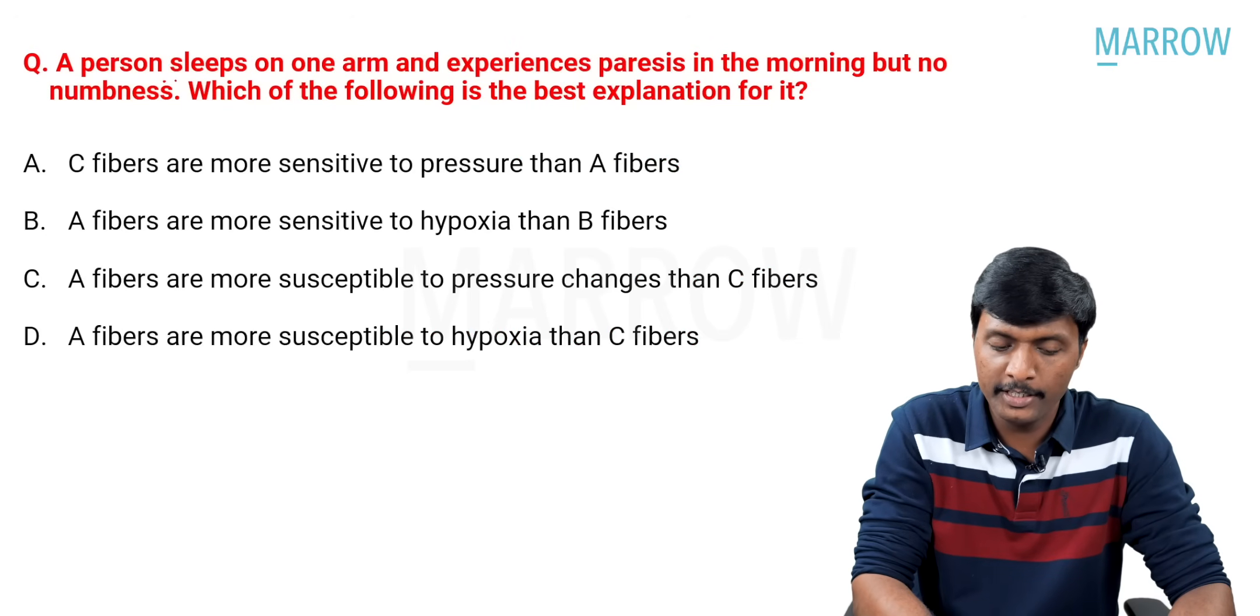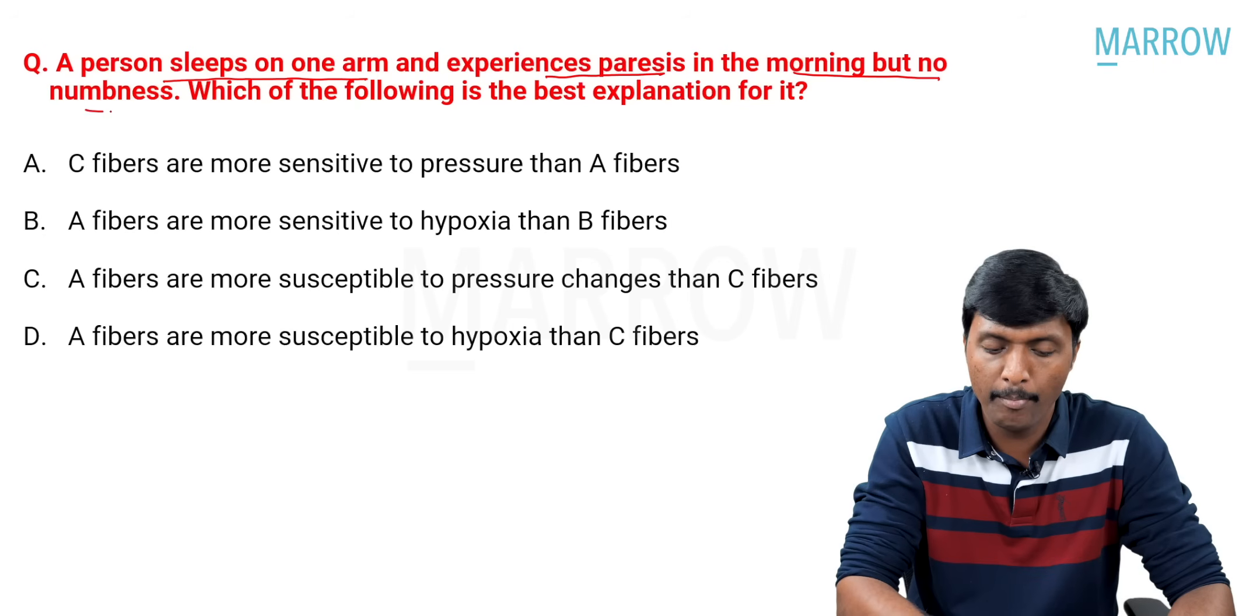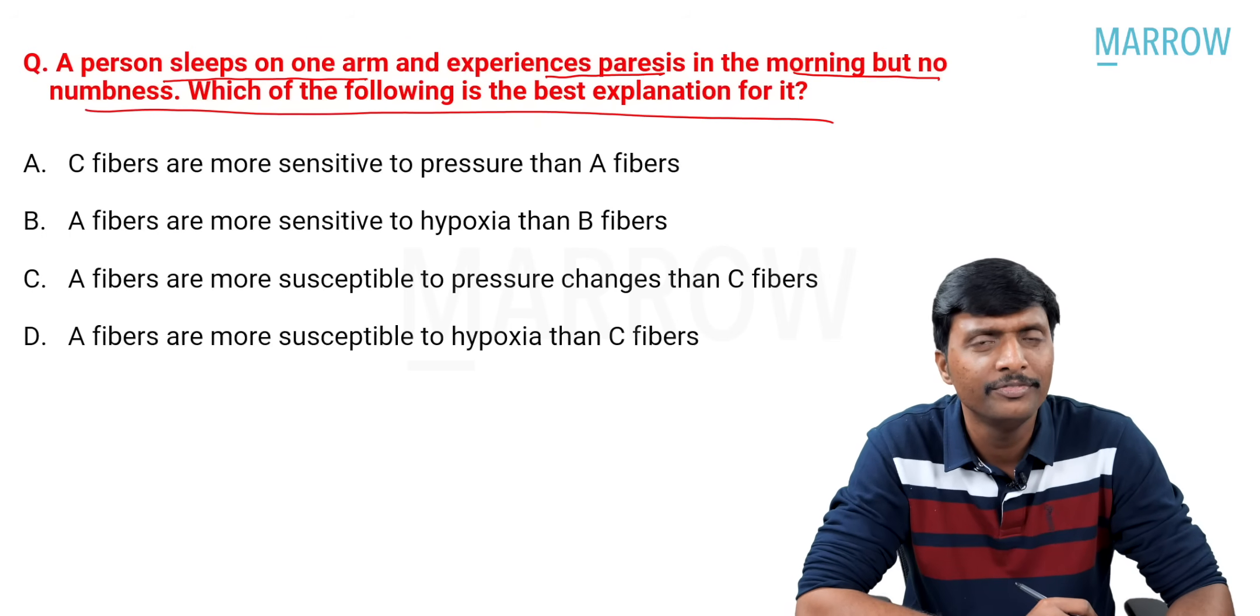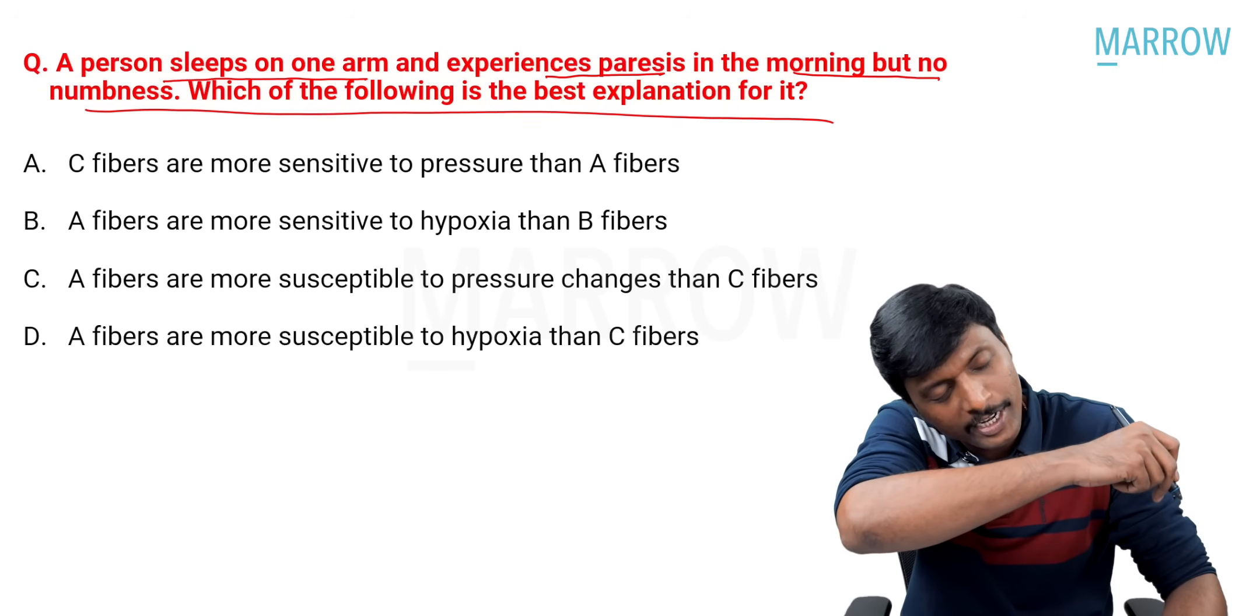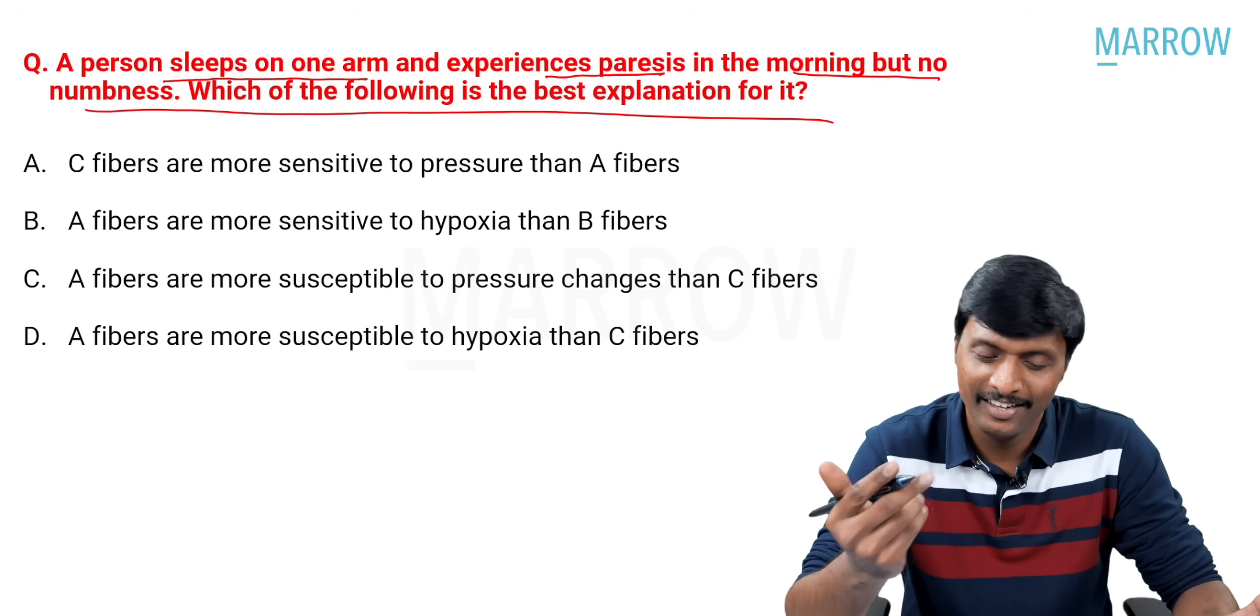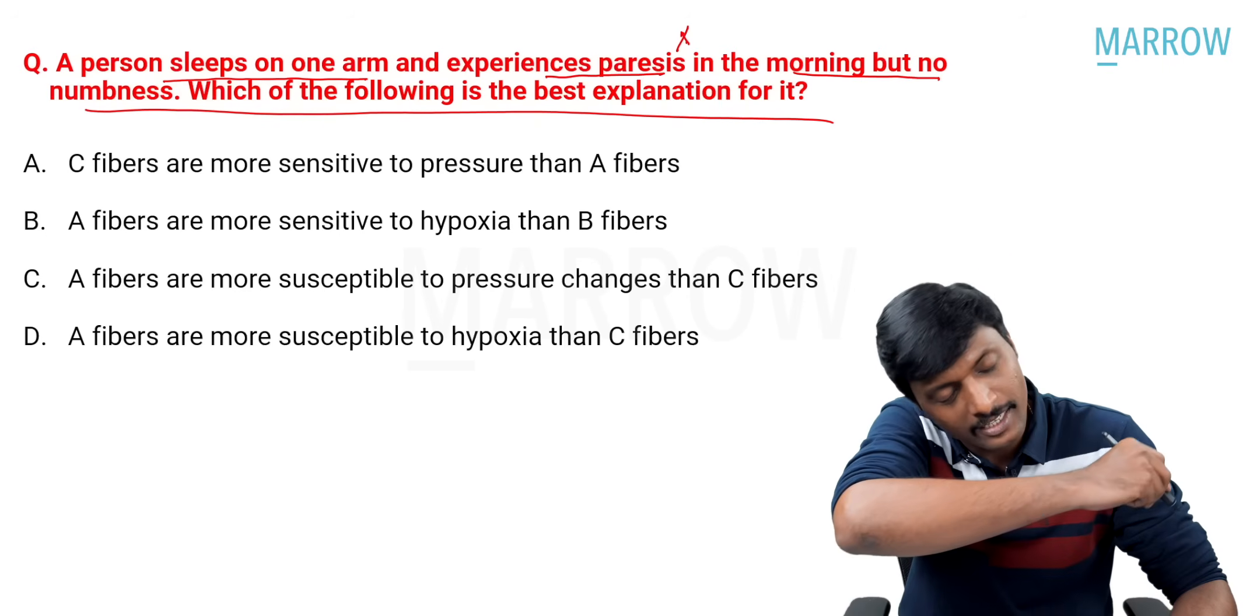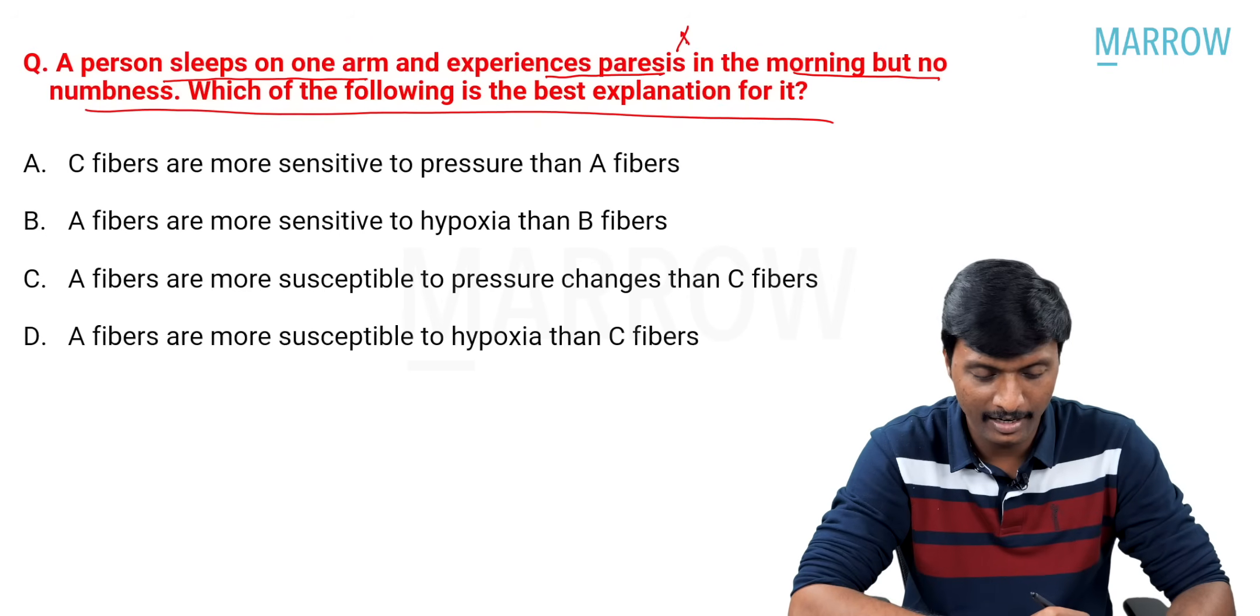A person sleeps on one arm and experiences paresthesia in the morning but no numbness. Which of the following is the best explanation for it. We commonly tend to do this. Forgetting pillow. We tend to think elbow as pillow and we try to rest our head in our elbows. Suddenly, when you wake up, you will feel very important paresthesia. What is happening? Why? Any idea? If you just sleep on your elbow, what is going to happen?